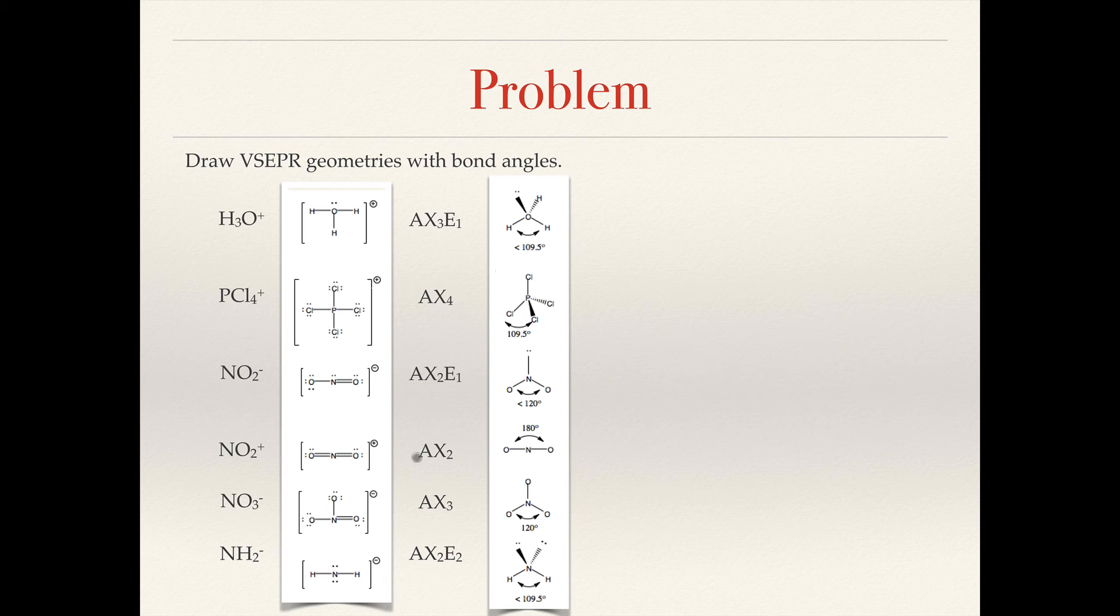NO2+ is a good reminder that we don't draw double bonds in the VSEPR geometry, or you don't need to. We haven't done so in the book, so this would be linear with a bond angle of 180 degrees. That's rather straightforward, but you can also see the same thing here with AX3 in the case of NO3-. This is trigonal planar. We ignored the double bond. It also does not matter which resonance structure you pick. You're still going to get the same structure here. You're still going to get a trigonal planar structure of 120 degrees.